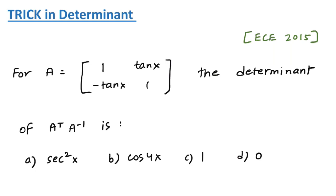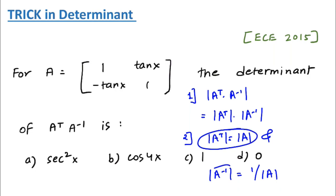So what is the trick? Let us see. If you want to solve this question orally, you have to understand two points. The first point is you have used the property of determinant: determinant of A transpose into A inverse equals determinant of A transpose into determinant of A inverse. The next part is you have to know the trick. The trick is: determinant of A transpose equals determinant of A, and determinant of A inverse equals one over determinant of A.